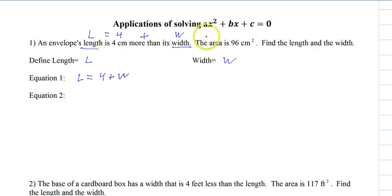Let's move on to the next sentence. It says the area is 96 centimeters squared. Well, the formula for area is length times width, and for the values that we've been given, we are given an area of 96. And now that we have two equations, we can solve it.